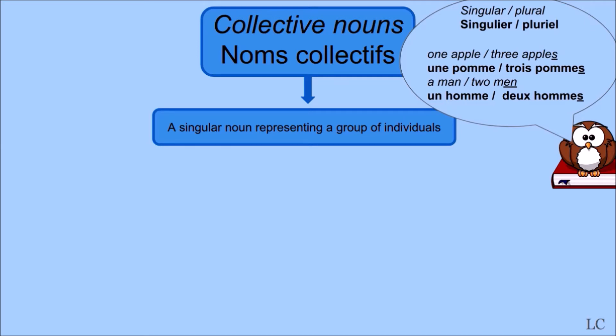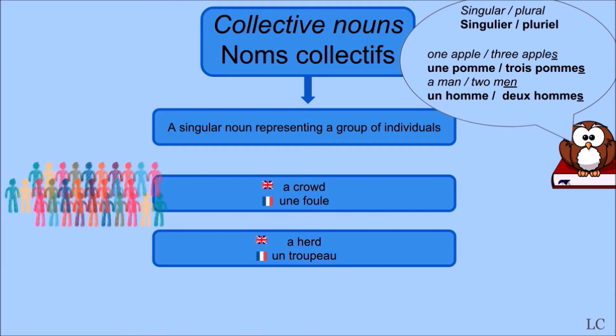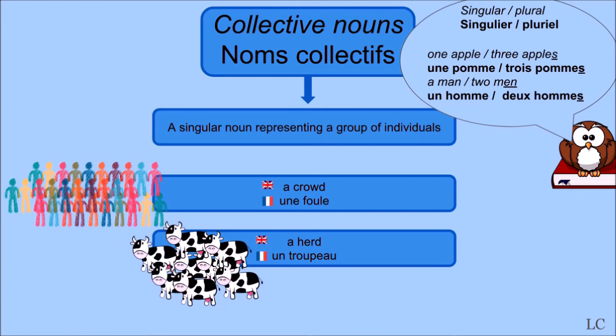So, back to our collective nouns. A crowd, une foule, is a singular noun — there is no S at the end — but it represents several people. A herd, un troupeau, is a singular noun, but it represents several animals.